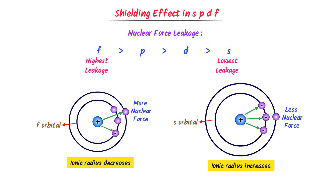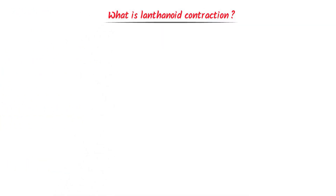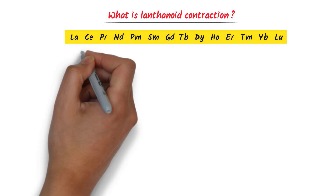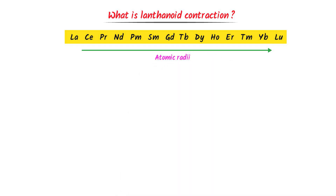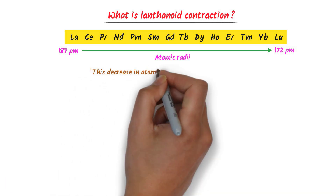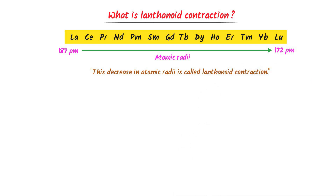If you have learned all these important concepts, congratulations — you have already learned Lanthanide Contraction. Consider the Lanthanide series: Lanthanum (La) is the first element and Lu is the last. If we go from left to right, the atomic radii of the Lanthanide series decreases from 187 picometers to 172 picometers. This decrease in atomic radii of the Lanthanide series is called Lanthanide Contraction.